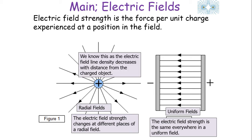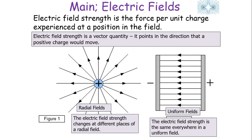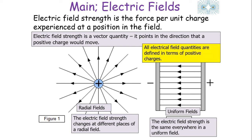In a radial field, the electrical field strength decreases with distance from a charged object because the electric field line density decreases. In a uniform field, the electrical field strength stays constant because the electrical field line density stays constant throughout that field. Electrical field strength is a vector quantity, which means we have to give a direction to it. It points in the direction that a positive charge would move if it was placed in the field. All electrical field quantities are defined in terms of positive charges.